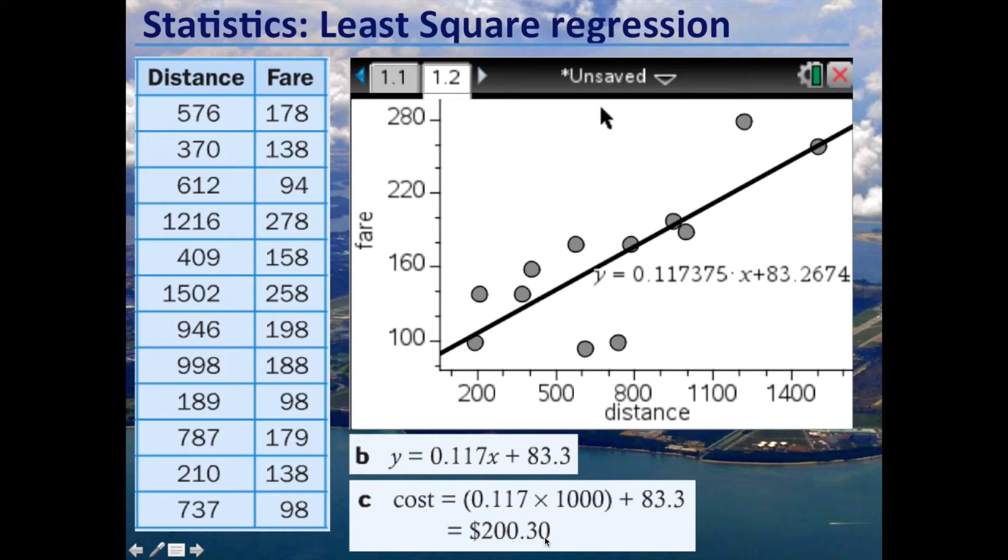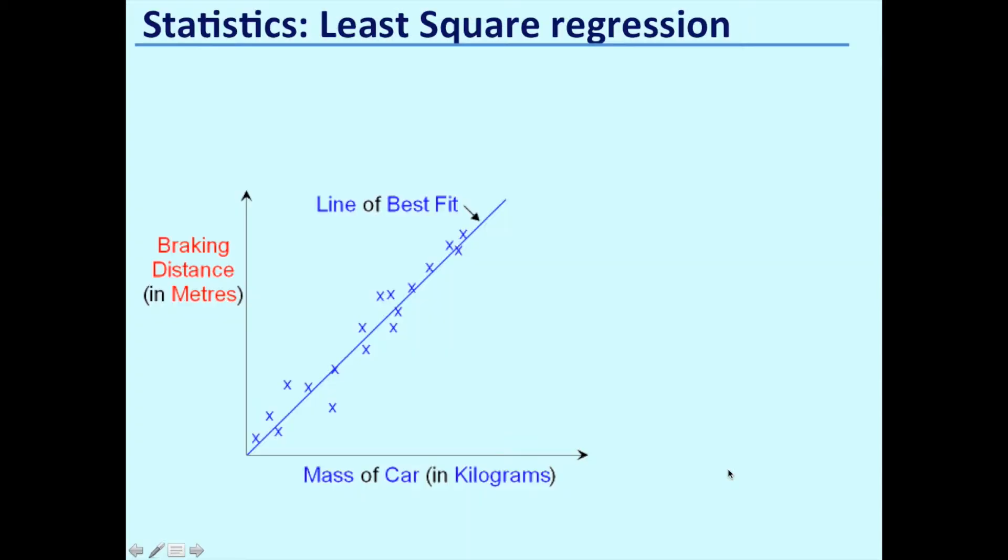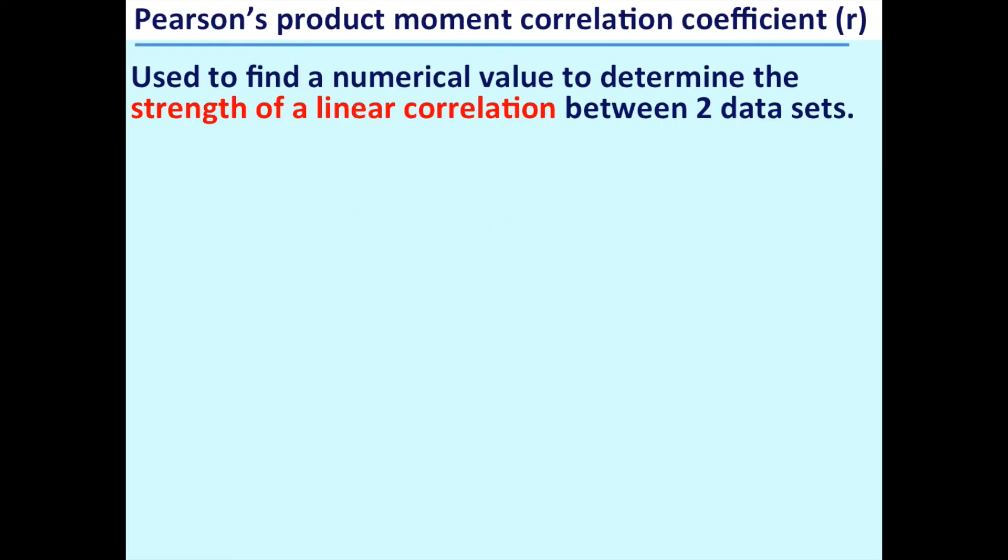Once we've got this, then we can make predictions. We were trying to find the fare when the distance was 1,000 kilometers, so all we're going to do is substitute in x is 1,000 and end up with a fare of $200.30. Once you've got to grips with this, have a look at exercise 8A on page 347.